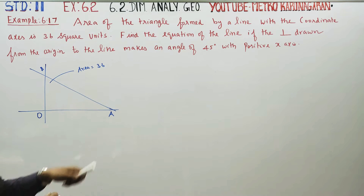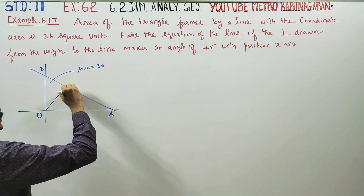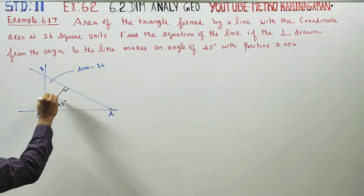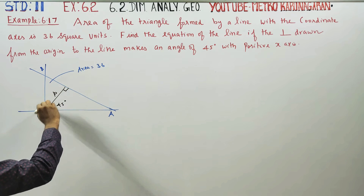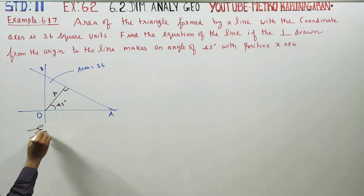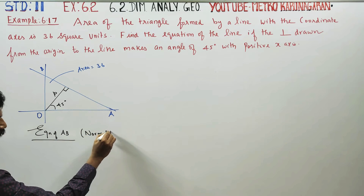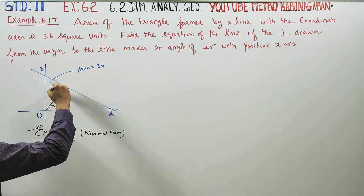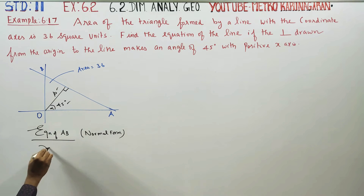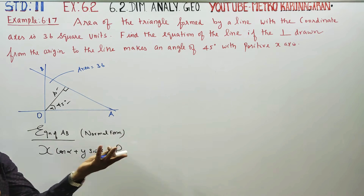The perpendicular drawn from the origin makes an angle of 45 degrees. The distance from the origin — that is, the perpendicular — is called P. This is the equation of AB. The normal form is one of the models for the equation of AB. This is the formula.